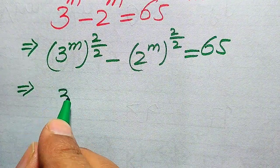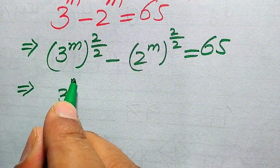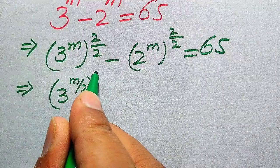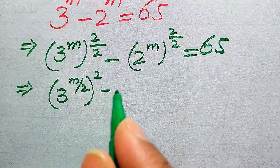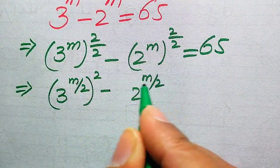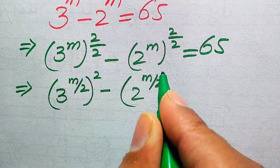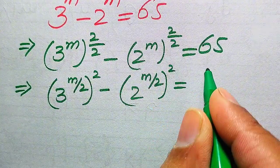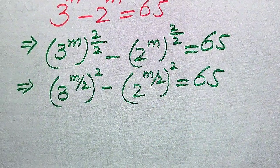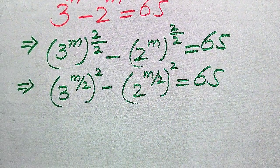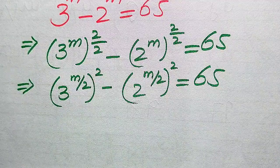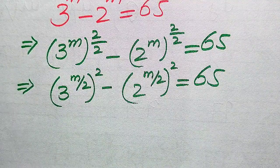Now we move 1 over 2 inside the term, and it will be written as 3 to the power of m over 2, whole squared, minus 2 to the power of m over 2, whole squared, equals 65. In the next step we need to convert this exponential equation into quadratic form.